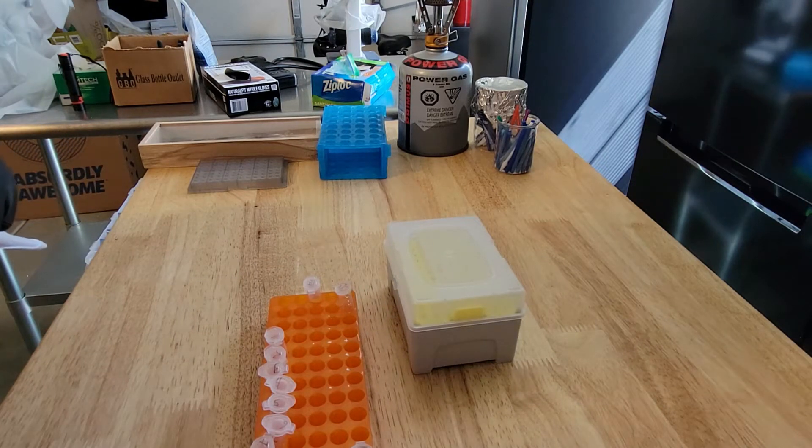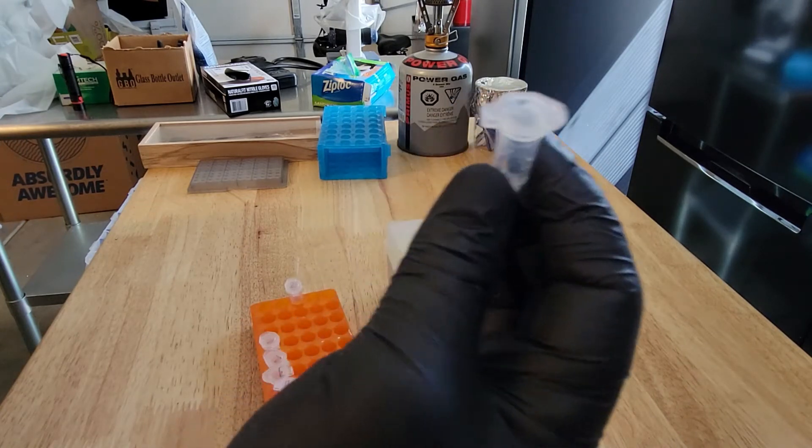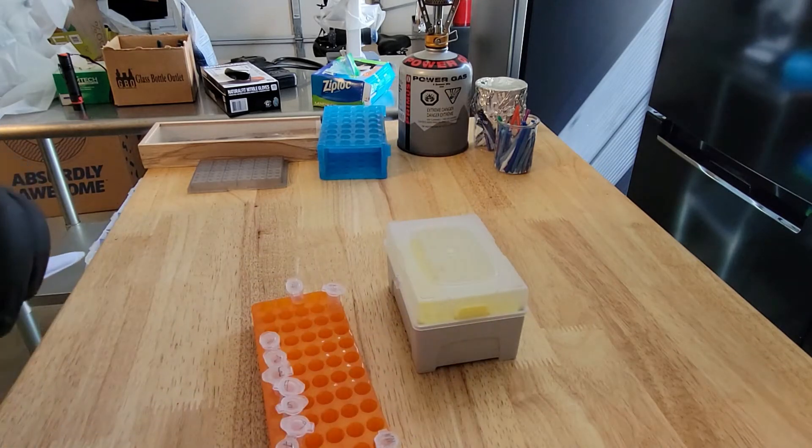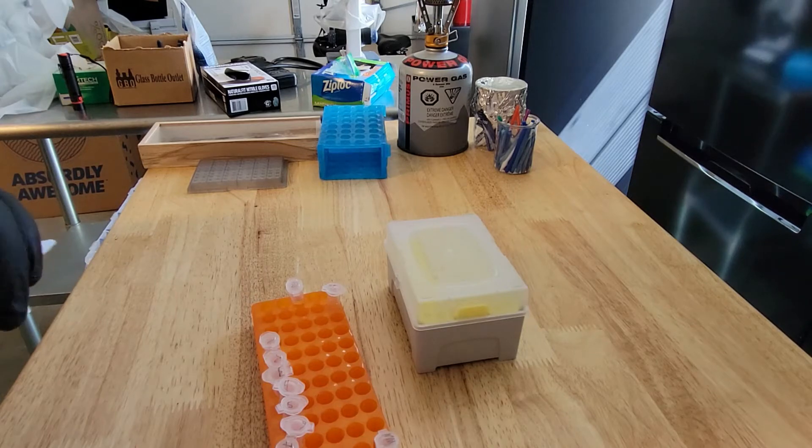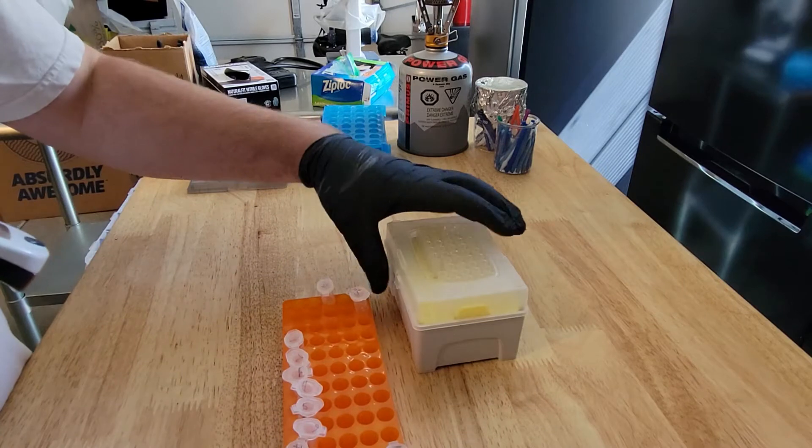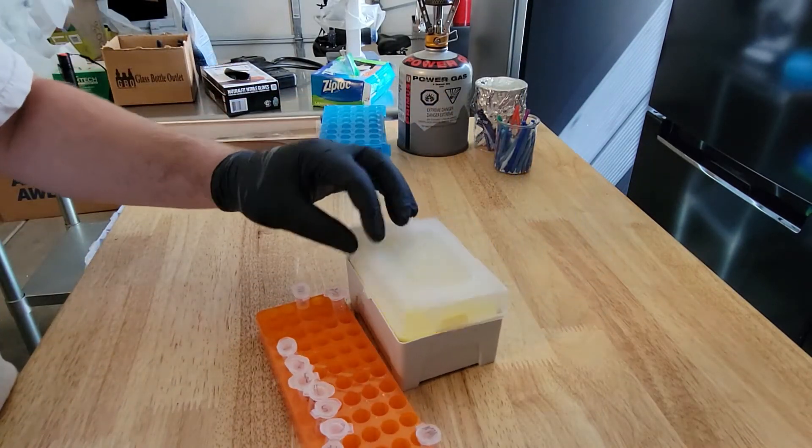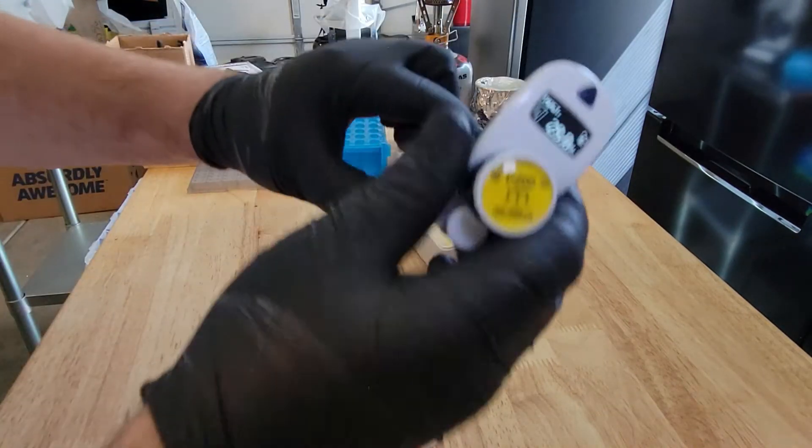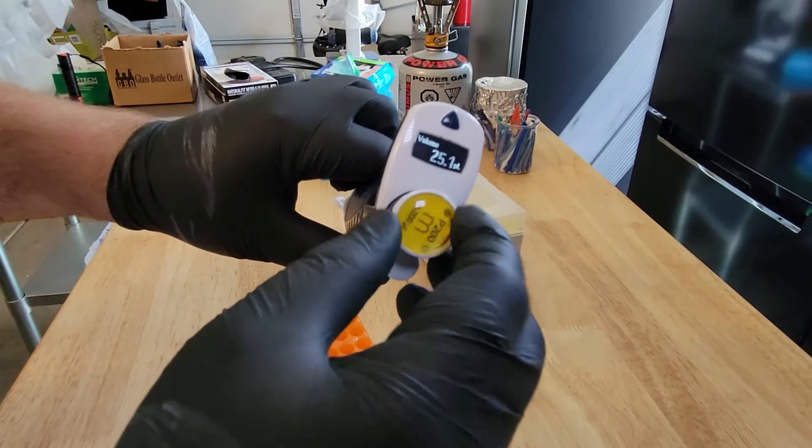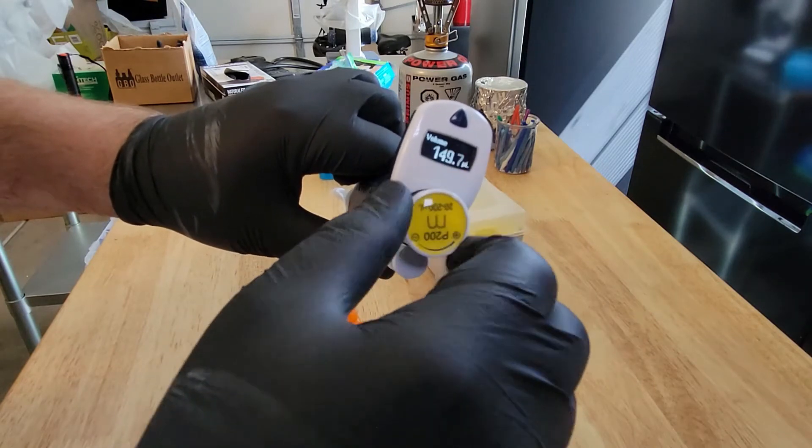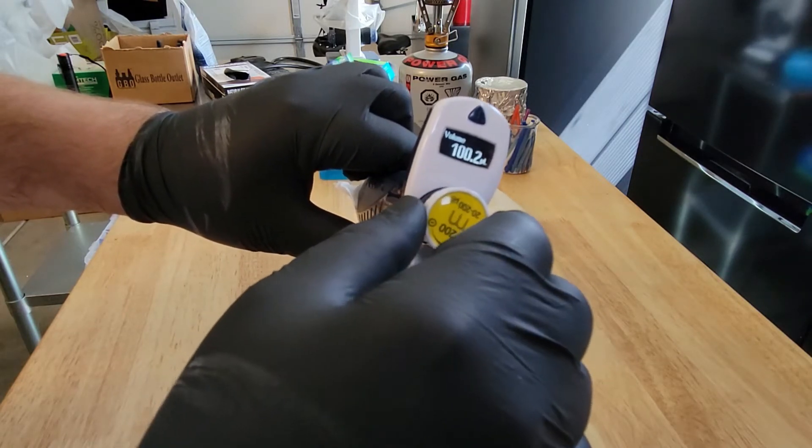Before we do our mushroom extraction, we're going to add our extraction buffer to all the microcentrifuge tubes. This extraction buffer is made from tris and some potassium hydroxide and a couple of other chemicals. That's going to allow us to open up the nuclear envelope and get DNA out of the nucleus and also rupture the cell wall of the fungus. I'm going to take my micropipette. I got this one for free. These would normally be pretty expensive. We're going to change the volume to 100 microliters.